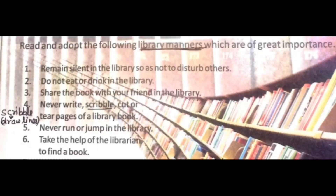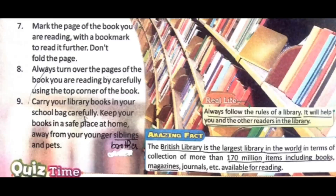Sixth point: take the help of the librarian to find a book. Librarian means jo library teacher hota hai, usse aap book maang sakte hain. Number seven: mark the page of the book you are reading with a bookmark to read it further - don't fold the page. Number eight: always turn over the pages of the book carefully using the top corner of the page.